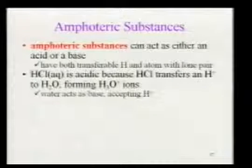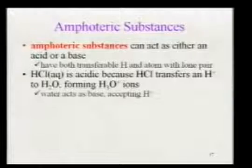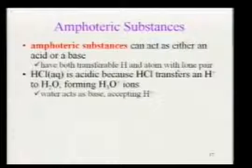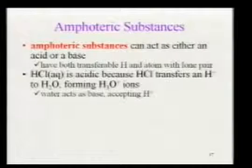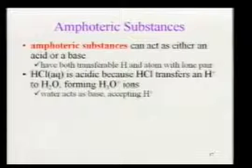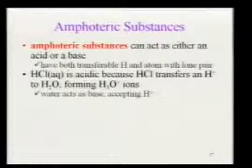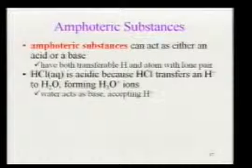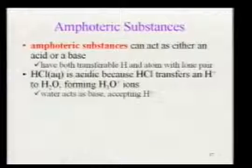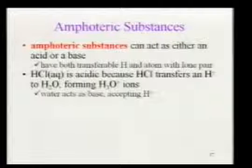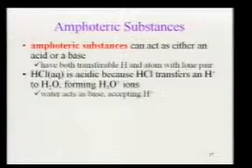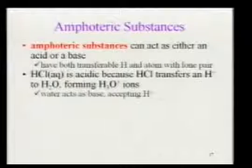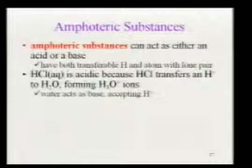HCl is acidic because it transfers a hydrogen to water to form hydronium ions. According to Arrhenius, HCl dropped in water splits apart and free-floating hydrogens make it an acid. Under Bronsted-Lowry, we look at it as a chemical equation: HCl releases its hydrogen, which locks onto a water molecule to form hydronium, and those hydronium ions float around. Because water accepted the hydrogen, water must have acted as a base by Bronsted-Lowry's definition.